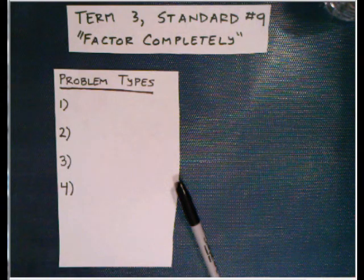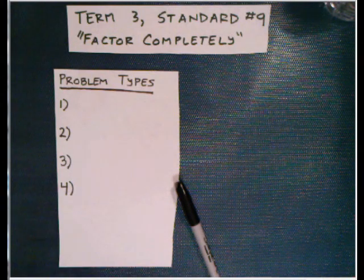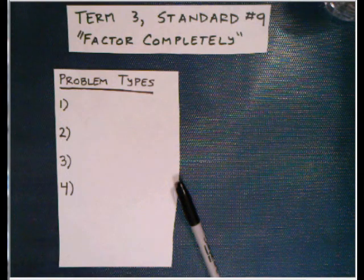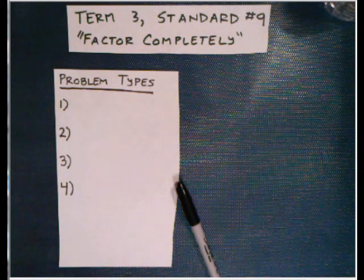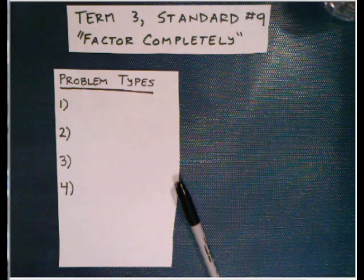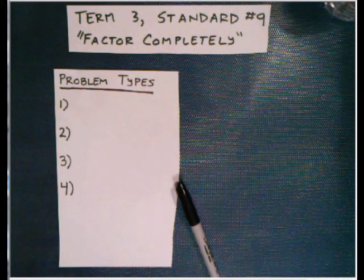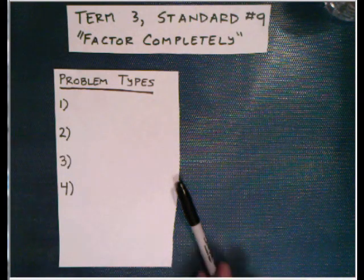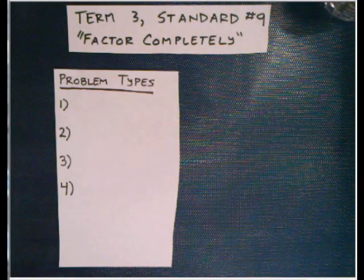If you've already watched the video for Standard Quiz Question 10, we used one strategy called the factor by grouping method for when you have four terms. In order to attack Standard Quiz Question Number 9, you've got to have a whole bunch of factoring techniques available to you, because the problem could be one of four types.